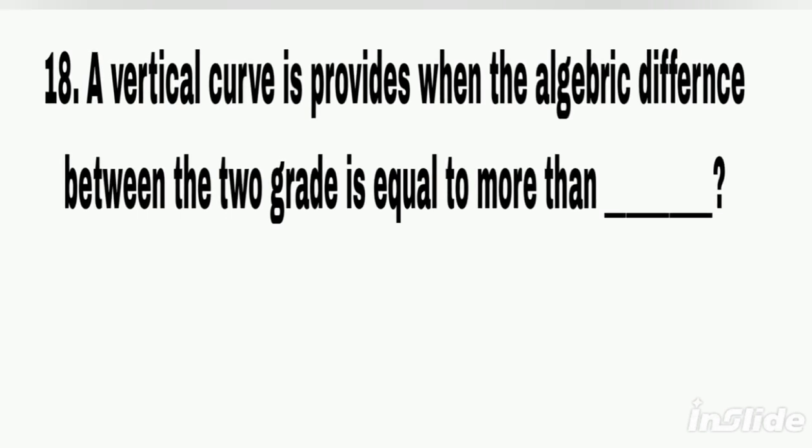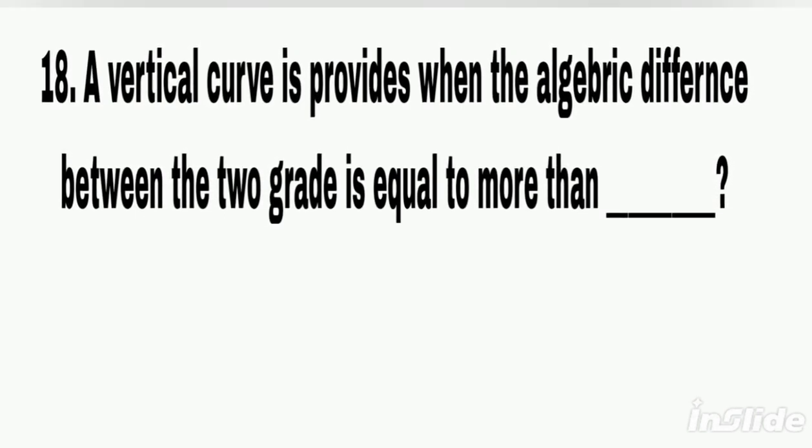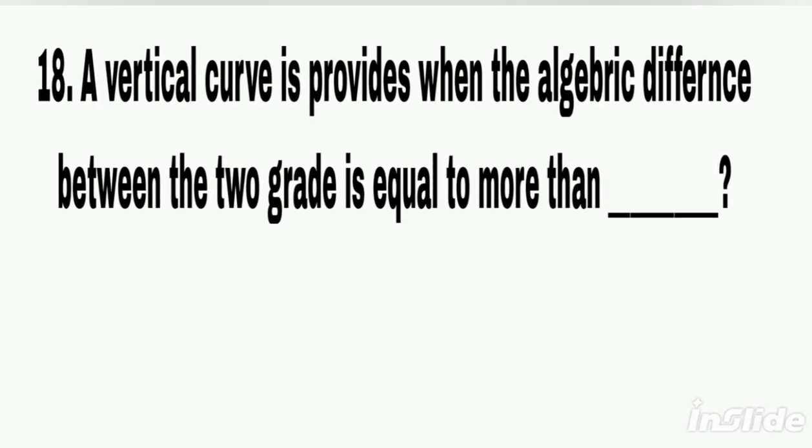Q18. A vertical curve is provided when the algebraic difference between the two grades is equal to or more than 4 mm per meter.